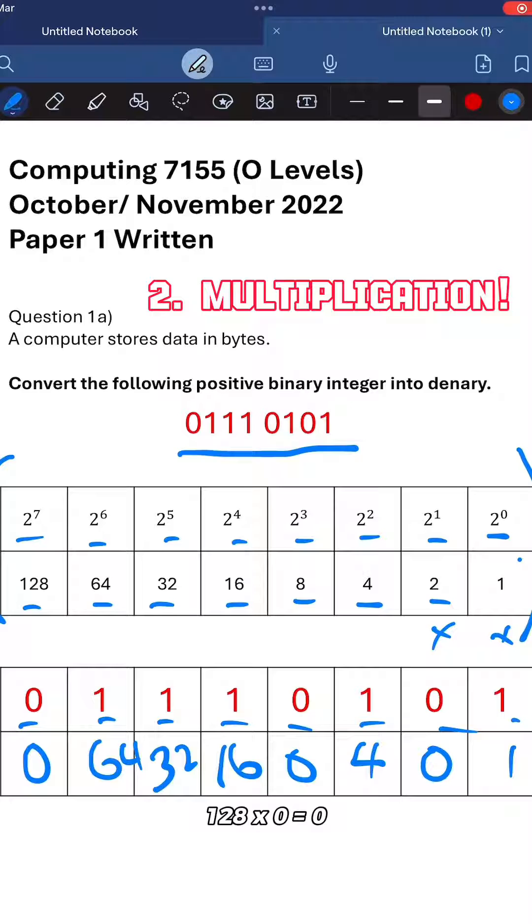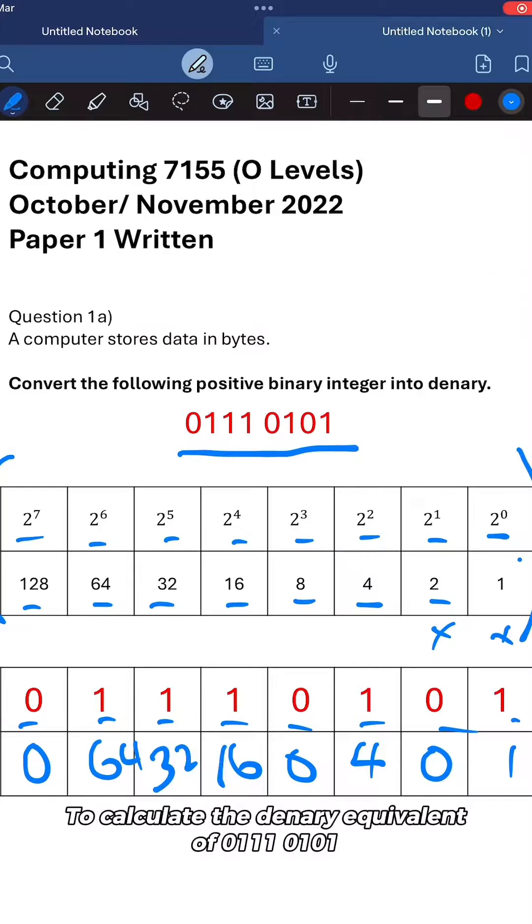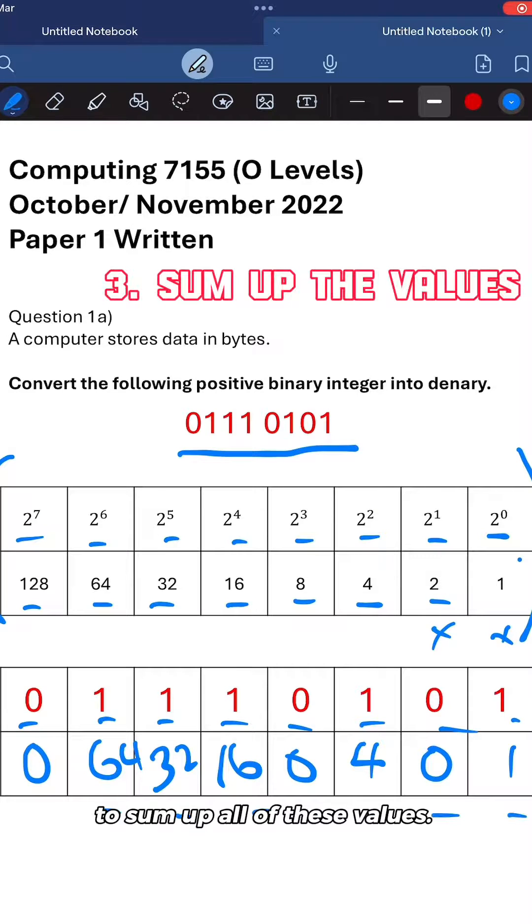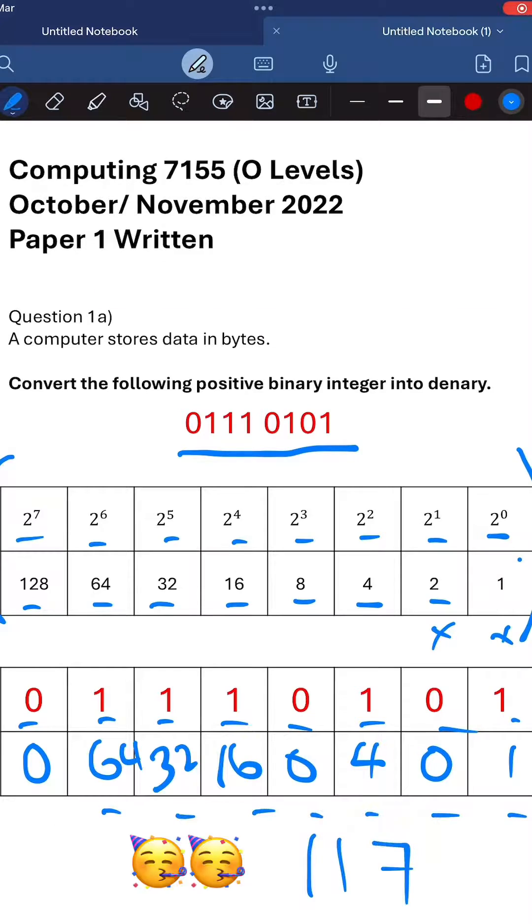And 128 times 0. So to calculate the denary equivalent of 0111 0101, all you need to do is calculate these values and sum them up. And once you sum up all of these values, the denary number will be 117.